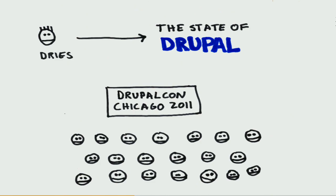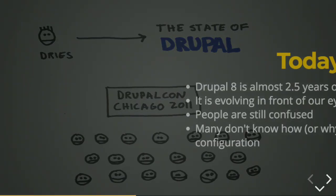At DrupalCon Chicago in 2011, Dries gave his state of Drupal address. Almost his entire address was about how painful certain aspects of Drupal still were — the number one point being configuration and Features and how difficult that was. Right at that conference, he declared the configuration management initiative as the first step forward with Drupal 8, appointed Greg Dunlap — otherwise known as Hayrocker — as the lead, and one year later at DrupalCon Denver 2012, the first iteration had been committed to core.